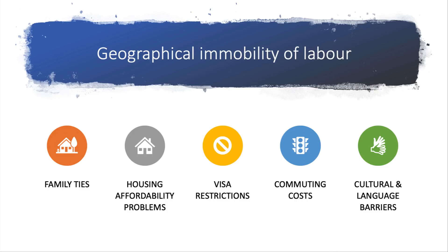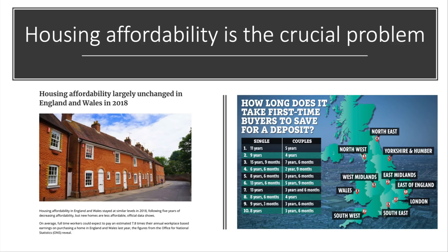The focus here is on housing affordability — an absolutely crucial problem in the UK. Many people cannot afford to buy or rent a house in order to move for work. The chart suggests that even for a couple, it can take nearly 10 years to save enough for a deposit on a house purchase. Renting is also a major challenge — in some parts of the country, rental costs per month take up over half of people's disposable incomes.